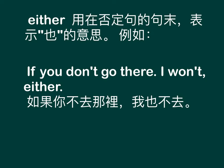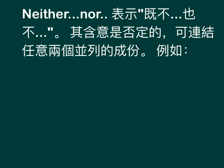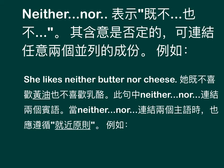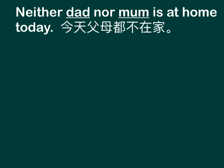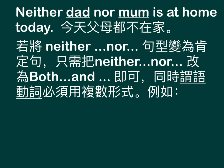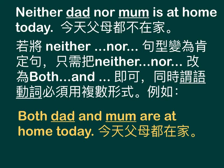Neither/nor means 既不，也不 (neither...nor), and its meaning is negative. It can connect any two parallel elements. For example: She likes neither butter nor cheese — 她既不喜欢黄油，也不喜欢奶酪. When neither/nor connects two subjects, the proximity rule also applies. For example: Neither dad nor mom is at home today — 今天父母都不在家. To change a neither/nor sentence to affirmative, replace neither/nor with both/and, and the predicate verb must use plural form. For example: Both dad and mom are at home today — 今天父母都在家.